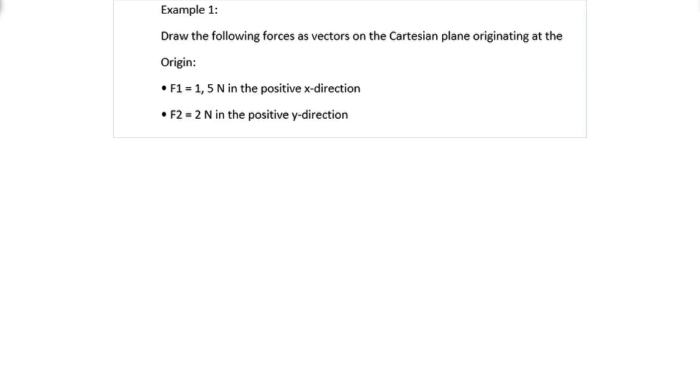Hi there, welcome back. Let us draw a force as a vector on a Cartesian plane originating at the origin. Given that F1 is 1.5 N in the positive x-direction and F2 is 2 N in the positive y-direction.